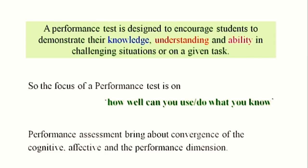For example: how well can you identify different types of seeds based on observable characteristics? Performance assessment brings about the convergence of three dimensions of the human personality: cognitive — concerned with thinking; affective — which also comes from our brain; and performance — our ability to make use of our body parts. It is the convergence of these three attributes: the cognitive, affective, and performance dimensions.